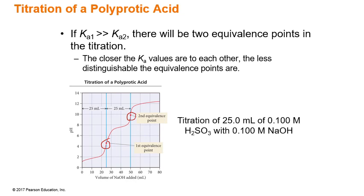The closer that those Ka values are to each other, the harder it is to see the individual steps for the polyprotic acid. But because there are multiple steps, we can tell that this is polyprotic.